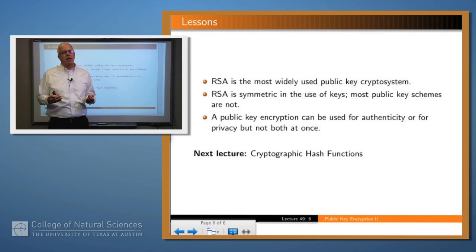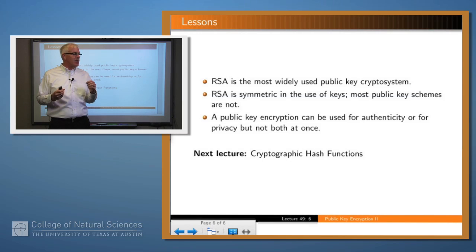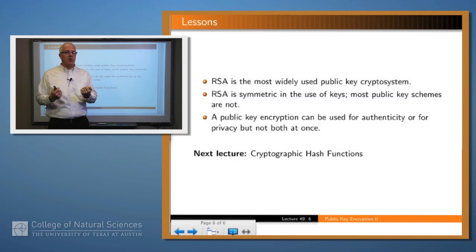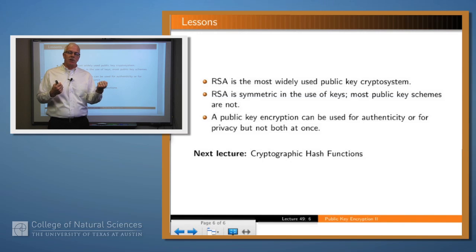RSA is the most widely used public key algorithm. Until recently it was a copyrighted algorithm, so you couldn't just use it uniformly. But the copyright has now expired, so you're welcome to use it. RSA is symmetric in the use of keys, meaning either key can be used for encryption and the other for decryption — that's not true of almost any other public key algorithm. Public key encryption can be used for authenticity or for privacy, but not both; you have to use different keys to gain both.